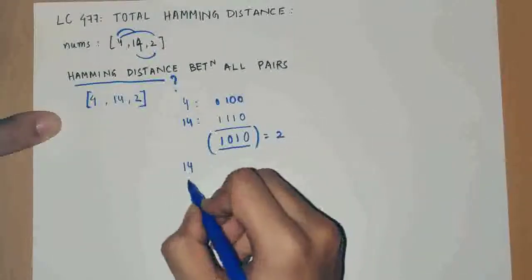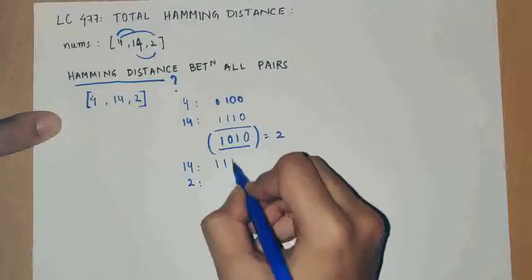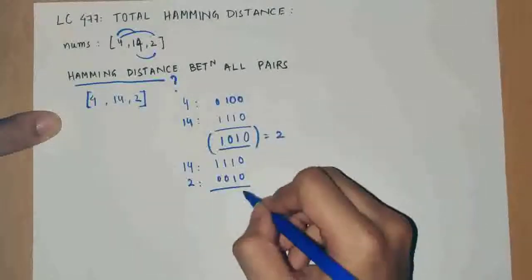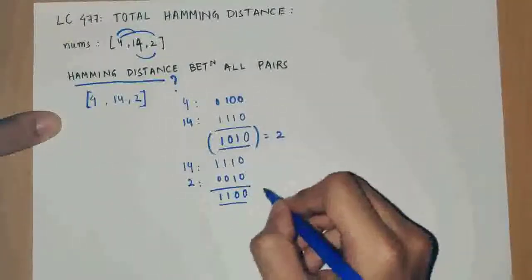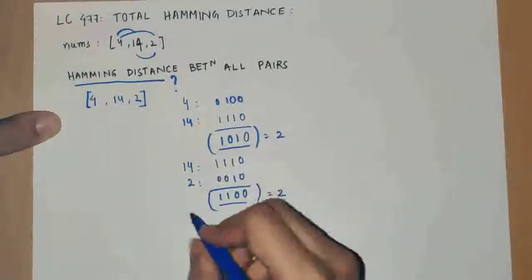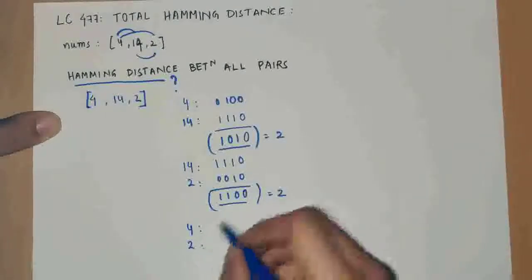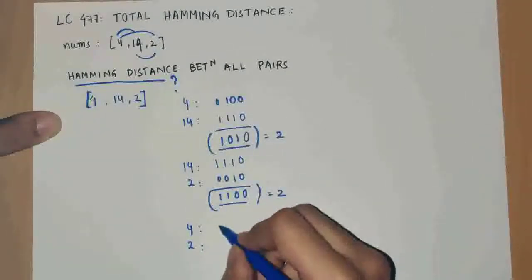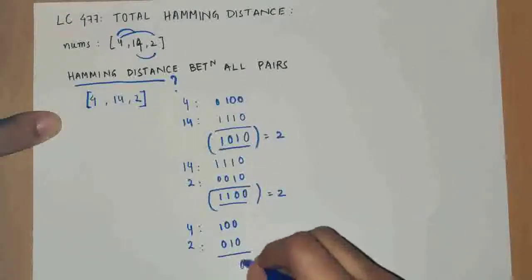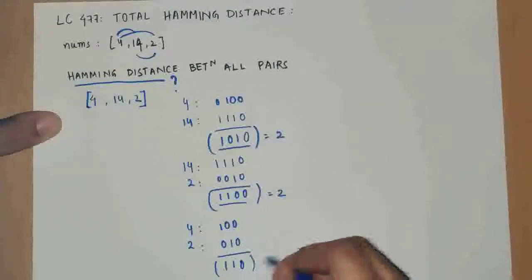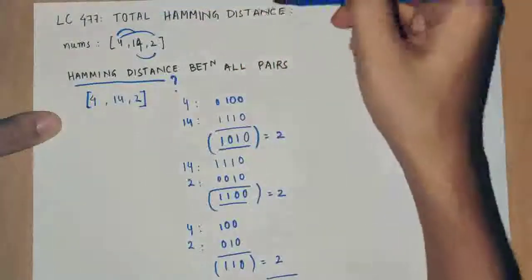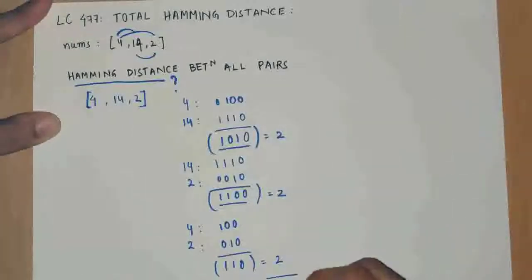For 14 and 2: 1110 and 10 — the XOR is 0011, so the hamming distance is 2. And the final pair is 4 and 2: 100 and 010 — the XOR gives 2 set bits, so the hamming distance is again 2. Since we need the total hamming distance, it is 2 + 2 + 2, which equals 6.